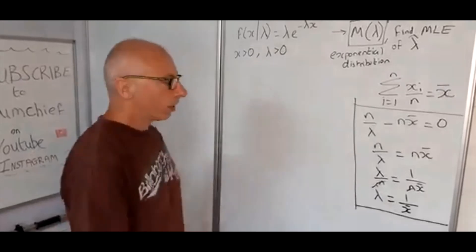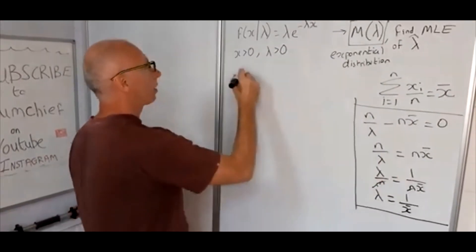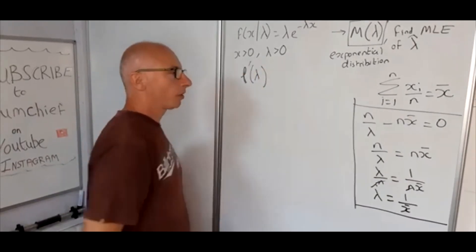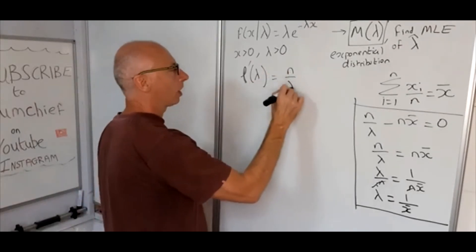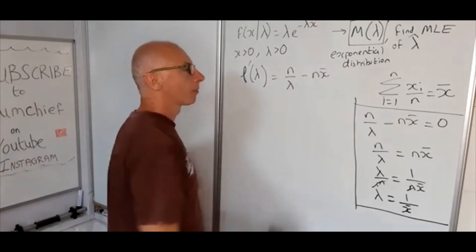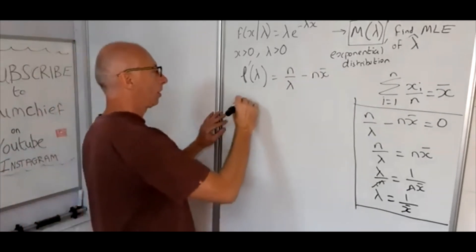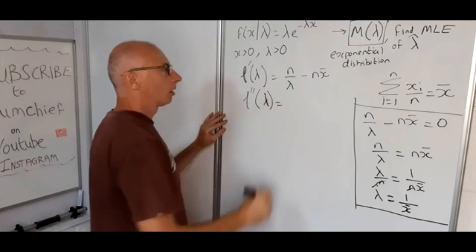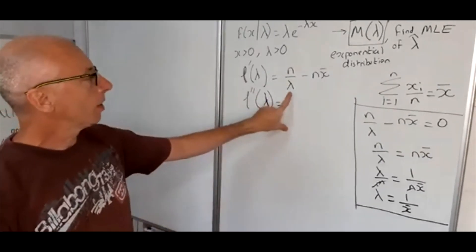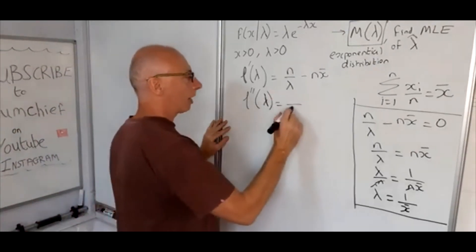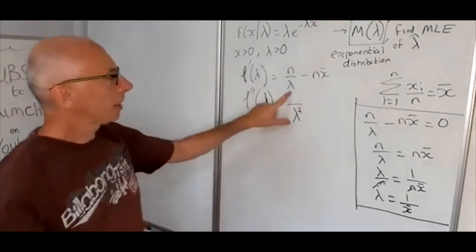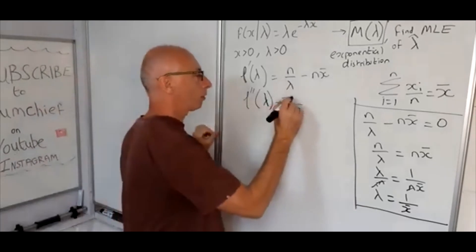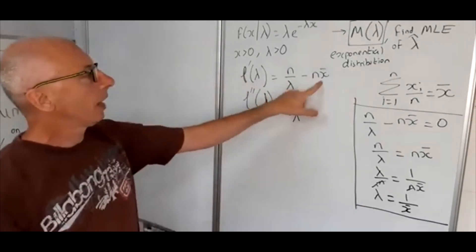To confirm this is a maximum, we take the second derivative. The first derivative was n / lambda - n * x̄. Differentiating n / lambda (which is n * lambda^(-1)) again with respect to lambda gives -n / lambda^2. The term -n * x̄ is constant in lambda, so its derivative is zero.